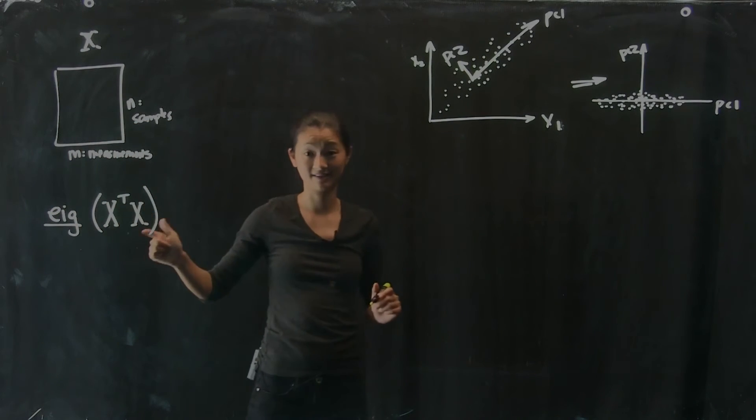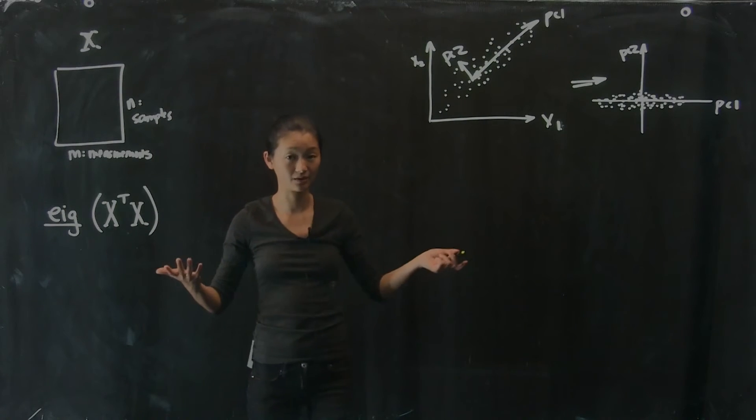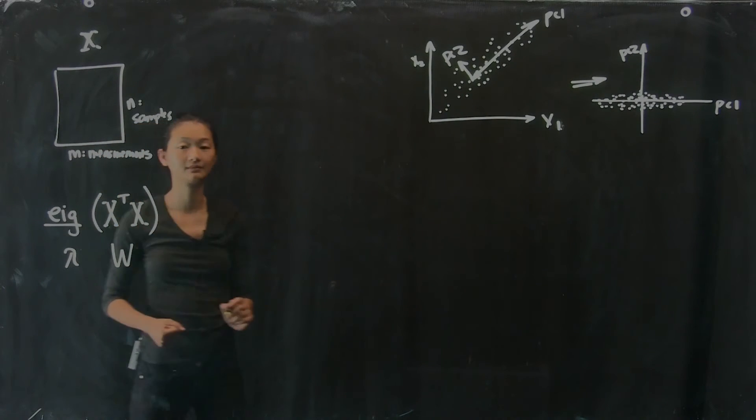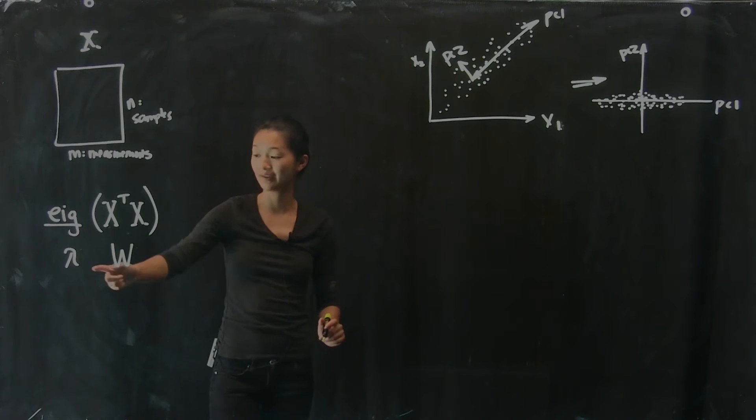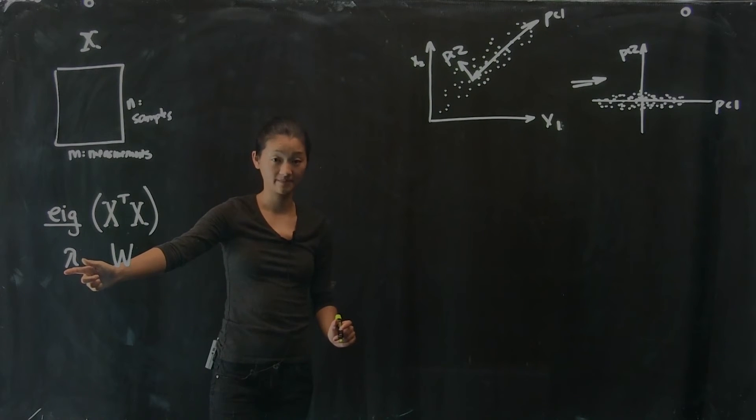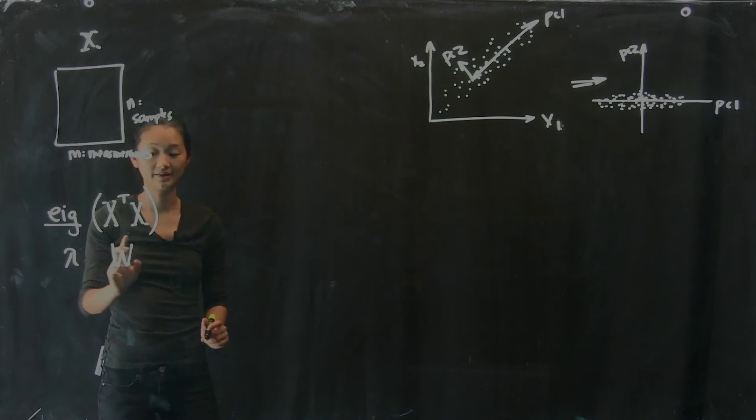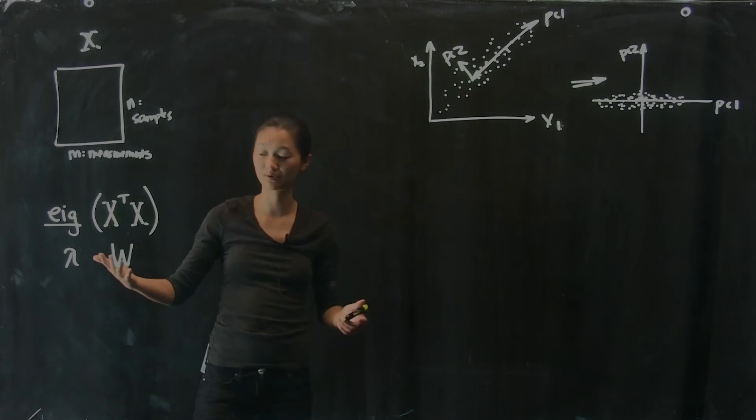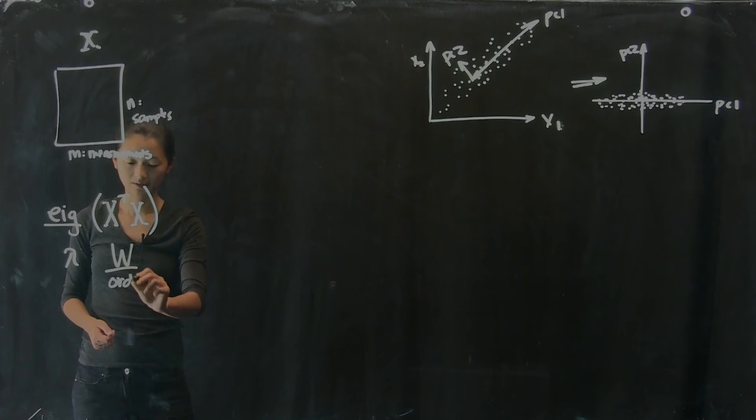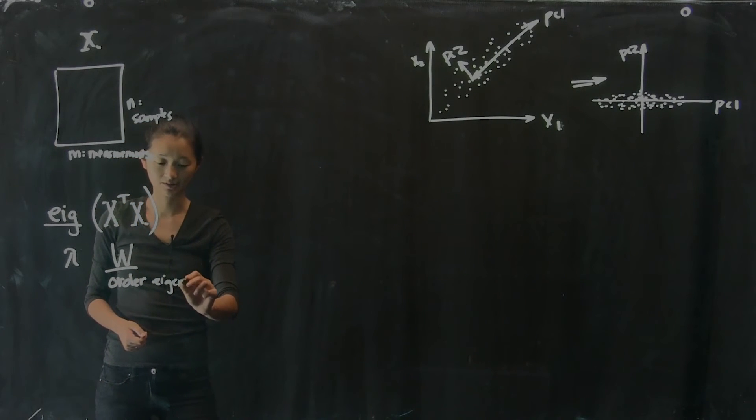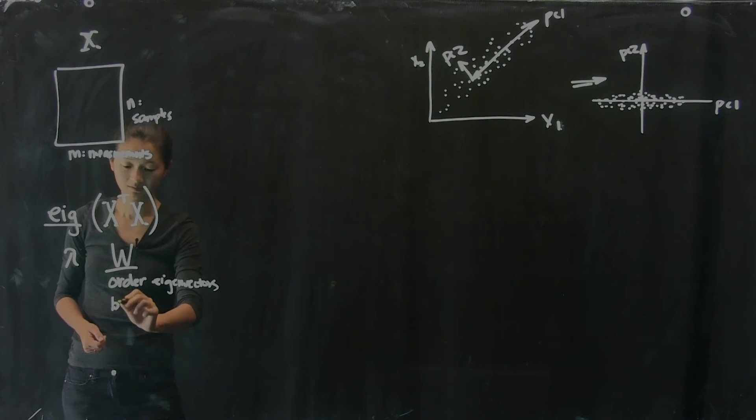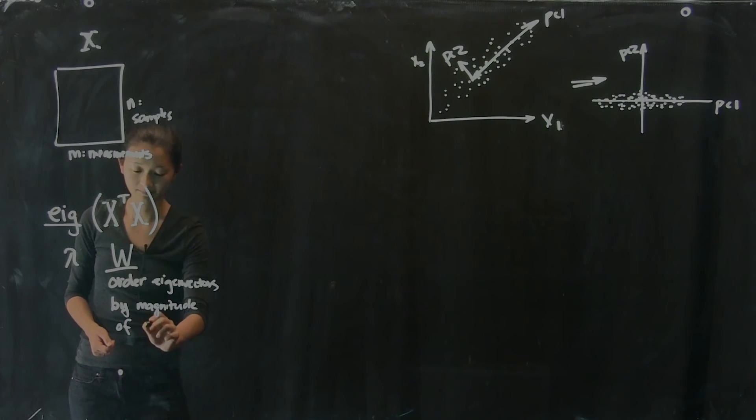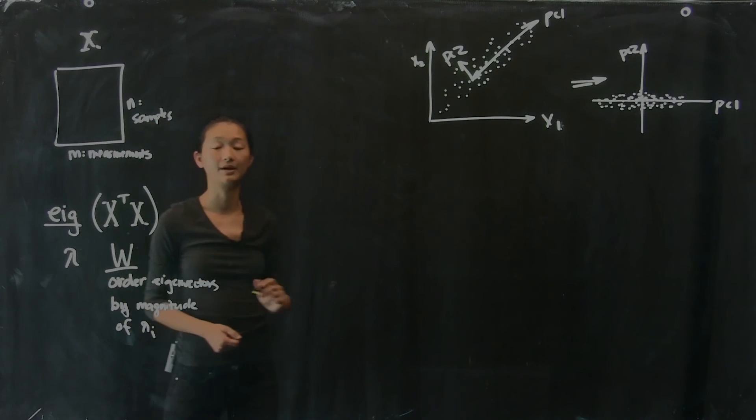Now, if I did this, I'm going to end up with some eigenvalues and eigenvectors. And what I can do is look at the eigenvalues and see how big they are. And I'm going to order the eigenvectors based on the magnitude of the eigenvalues. So I'm going to take my W and order these eigenvectors by magnitude of their corresponding eigenvalues.